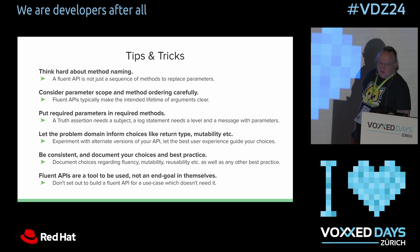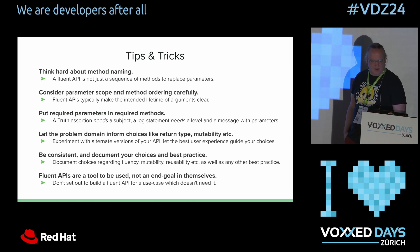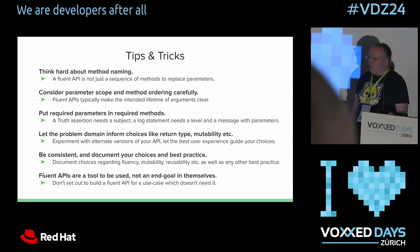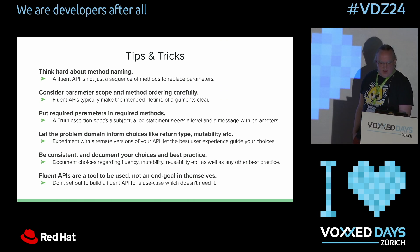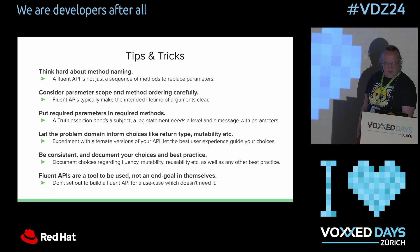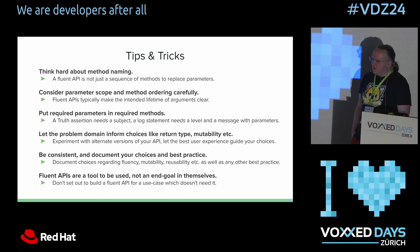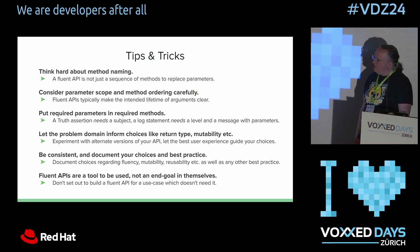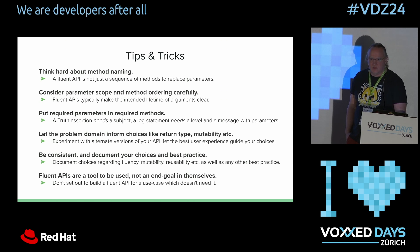Some quick tips and tricks, roughly in order of value: Think really hard about method naming — the difference between good and bad fluent APIs is very often how methods are named and how carefully people have thought about them. Parameter scope and method ordering are also important. If you have required parameters, put them in required methods — things that are needed, don't leave them optional to be forgotten. Let the problem domain inform what you're doing; don't try to make a fluent API for a non-fluent, non-domain-specific problem. Fluent APIs are not the end goal — they're just a tool. If they work for you, use them; if they don't, do something else.